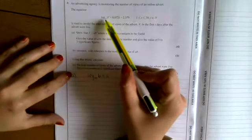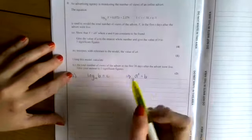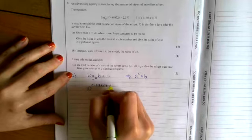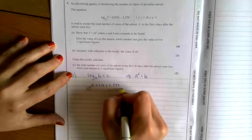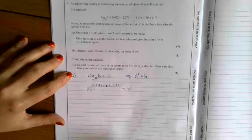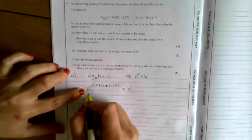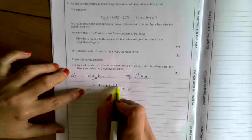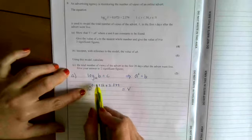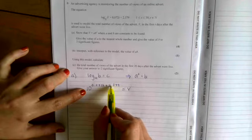So that means that 10 to the power of all of this equals B. 10 to the power of 0.072T plus 2.379 equals V. Now, we can use our index laws here and split these two things up. 10 to the power of all of this is equal to 10 to the power of 0.072T multiplied by 10 to the power of 2.379.